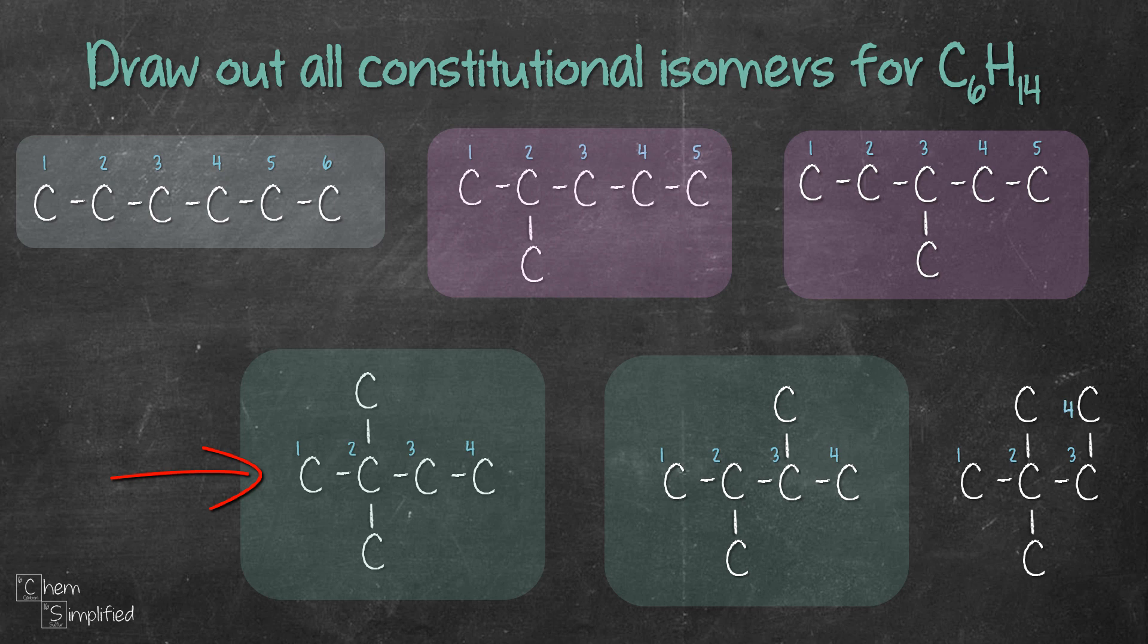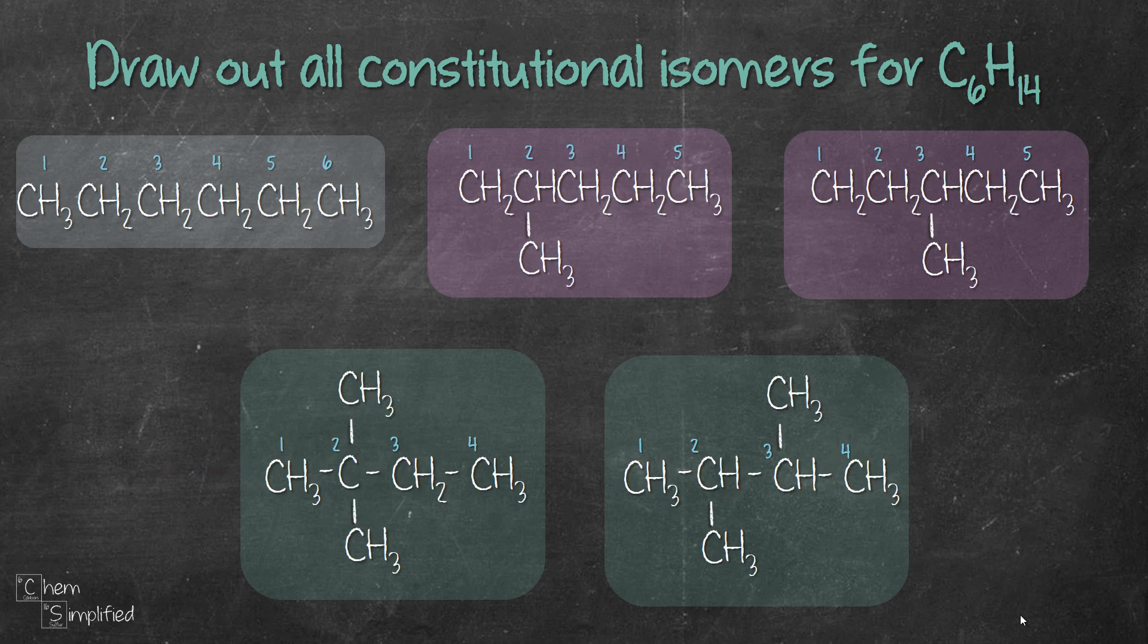We've drawn out all possible isomers for C6H14. To complete the structures, I've added in the hydrogens. Just keep in mind that each carbon makes 4 bonds. So subtract the number of bonds it's making with neighboring carbon and fill in with the correct number of hydrogens.